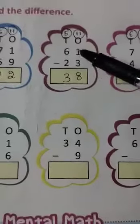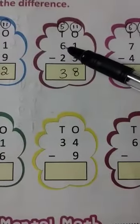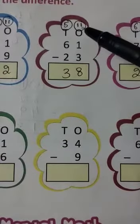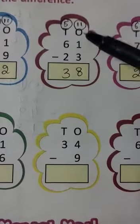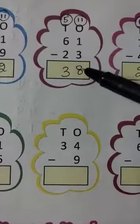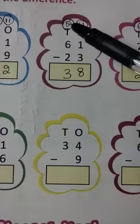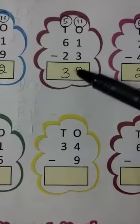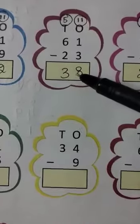Next problem. In the ones place, 3 minus 6 — can't subtract, so borrow from tens. After borrowing, 11 minus 3 is 8. In the tens place, after borrowing 1, we have 5 remaining; 5 minus 2 is 3. So the answer is 38.